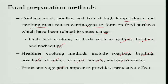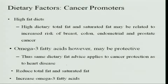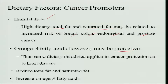Fruits and vegetables are said to have a protective effect because they contain lots of vitamins and minerals, but when they carry a lot of pesticides, that is a big concern. Among dietary cancer promoters, a high fat diet is a major one. High total dietary fat, especially saturated fat, may be related to breast cancer, colon cancer, endometrial, and prostate cancer. Omega-3 fatty acids may be protective, and the same dietary fat advice applies to both cancer protection and heart disease.